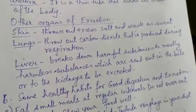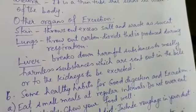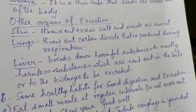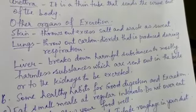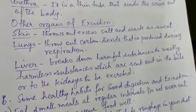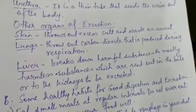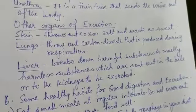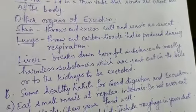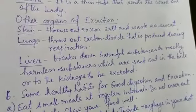Other organs of excretion: the skin throws out excess salt and waste as sweat. The lungs throw out carbon dioxide produced during respiration. The liver breaks down harmful substances into mostly harmless substances, which are sent out in the bile or to the kidneys to be excreted.